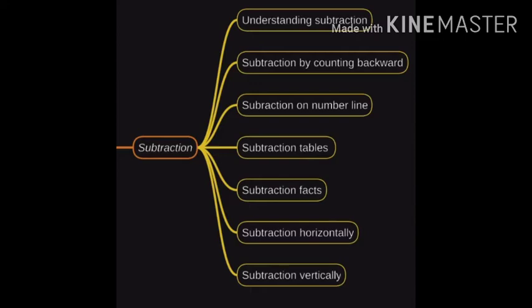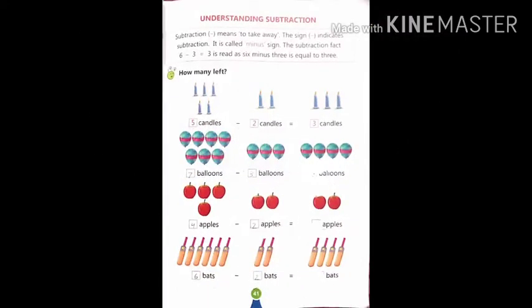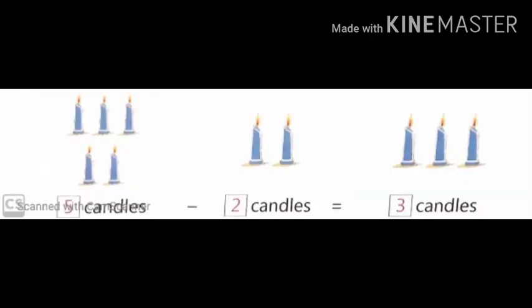Look at here. This is the book page number 41 of your maths book. Your first question is five candles minus two candles. So here, what do you have to do? You have to take away two candles from the five candles. So what is left with you? Just count it. Five candles minus two candles — one, two. So what is left with you? Three candles.